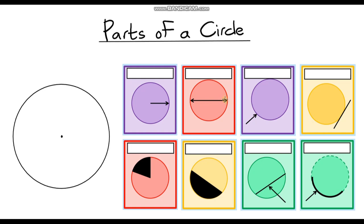Hello and welcome to a video on naming different parts of a circle. It can be quite tricky trying to remember all of the different names, and some of them are very similar, but I do have a few tricks and tips to help. There are eight different parts of a circle in total that you will come across. Some you may already know, some you may not have heard of before, but hopefully by the end of this video you'll be able to remember all eight of them.